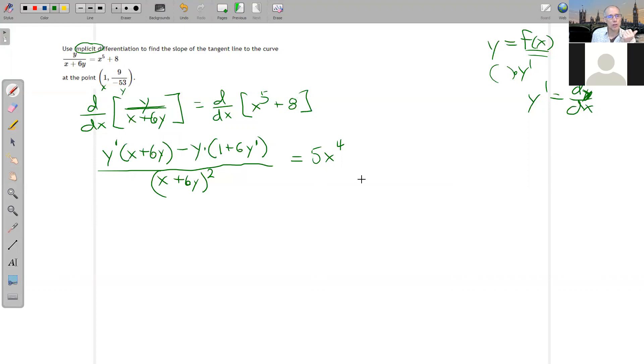So we're just going to plug in X equals 1 and Y equals negative 9 over 53. And then we'll solve for Y prime. So again, X equals 1 here. Y equals 9 over negative 53 or whatever your values are. So Y prime is not equal to, I'm not there yet.